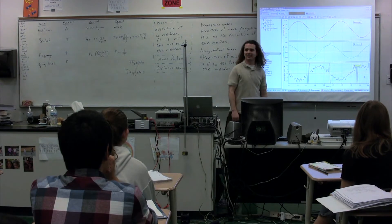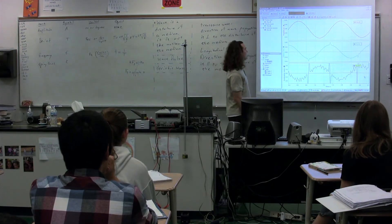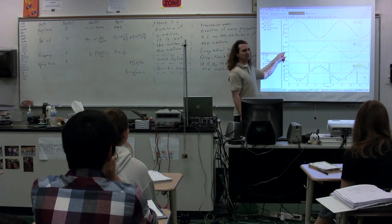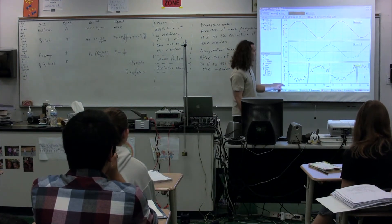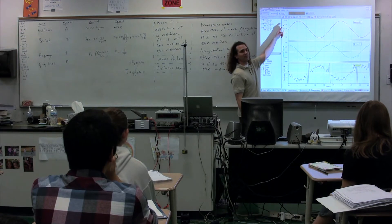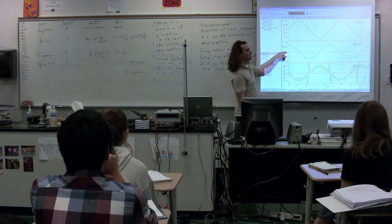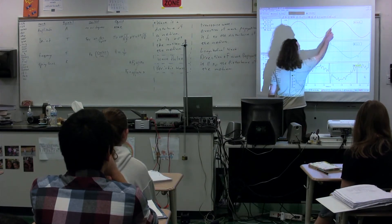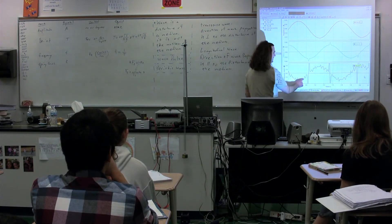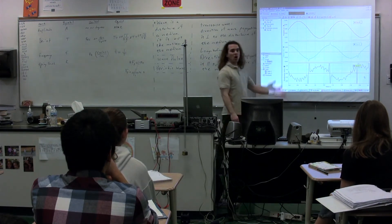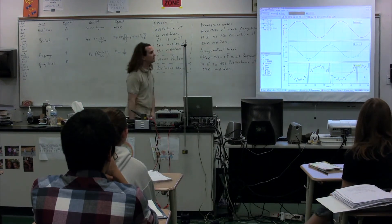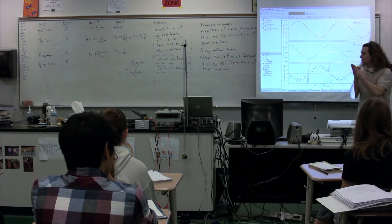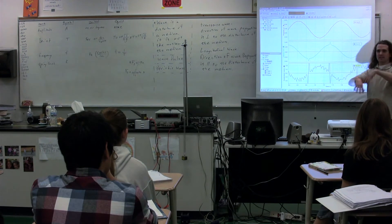For those of you in calculus, the derivative of position as a function of time is velocity. The derivative of velocity as a function of time is acceleration. This is a sine wave. The derivative of sine is cosine. The derivative of cosine is negative sine. So you have a sine wave, a cosine wave, and a negative sine wave — all the calculus is right there. You don't have to understand that for this class; it's just fun.